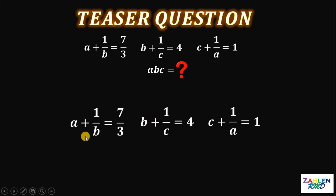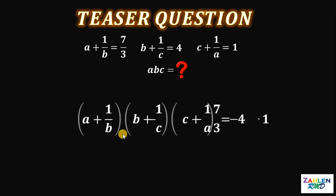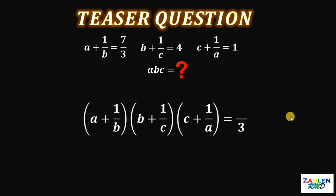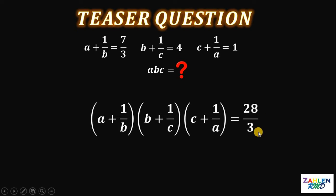Notice that we have A in our first equation, B in the second equation, and C in the third equation. So to achieve our goal, what we're going to do is multiply these three equations. We have (A + 1/B) multiplied by (B + 1/C) times (C + 1/A), which is equivalent to 7/3 times 4 times 1, giving us 28 over 3.